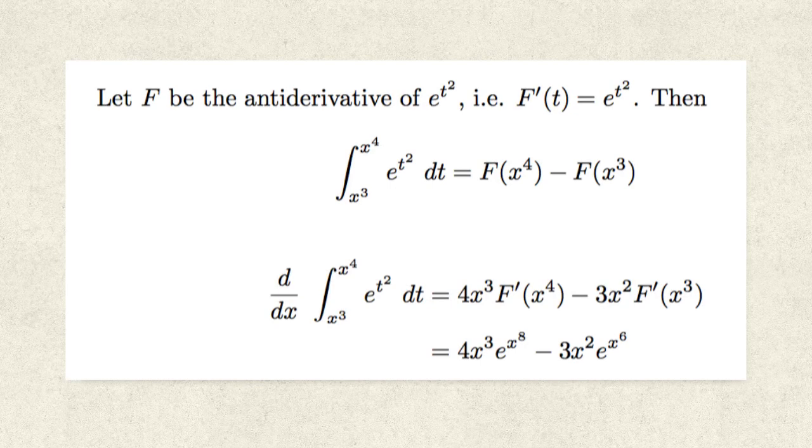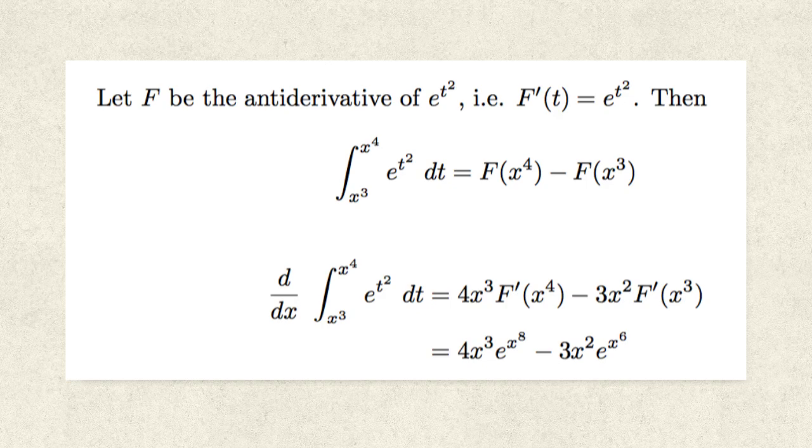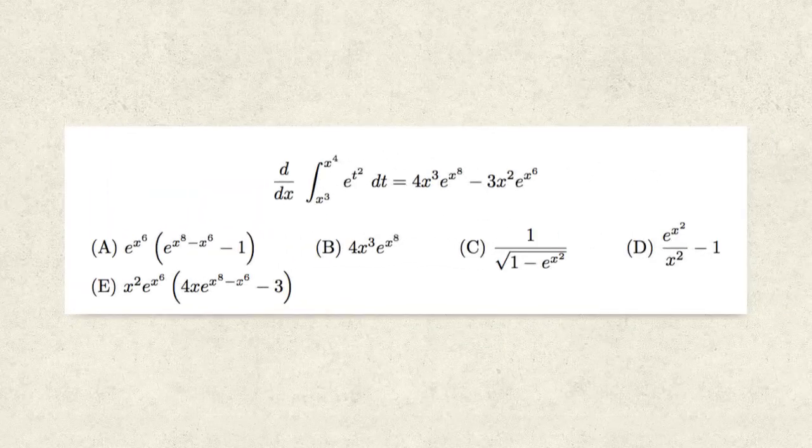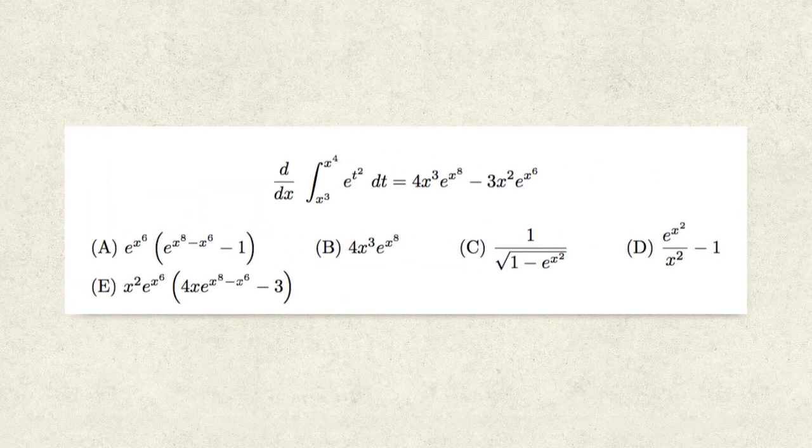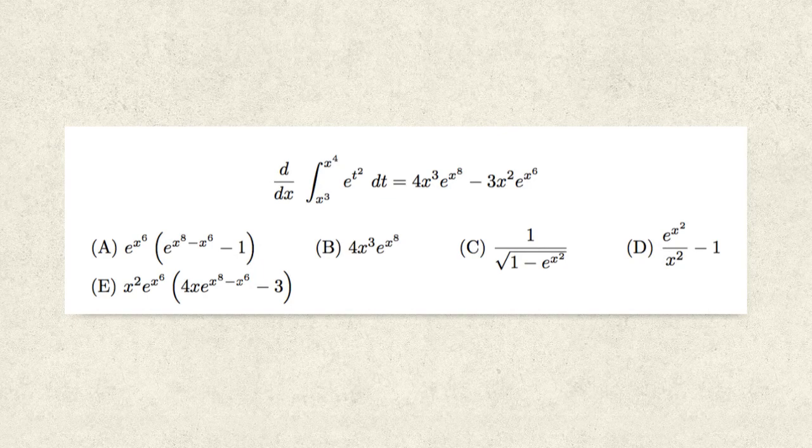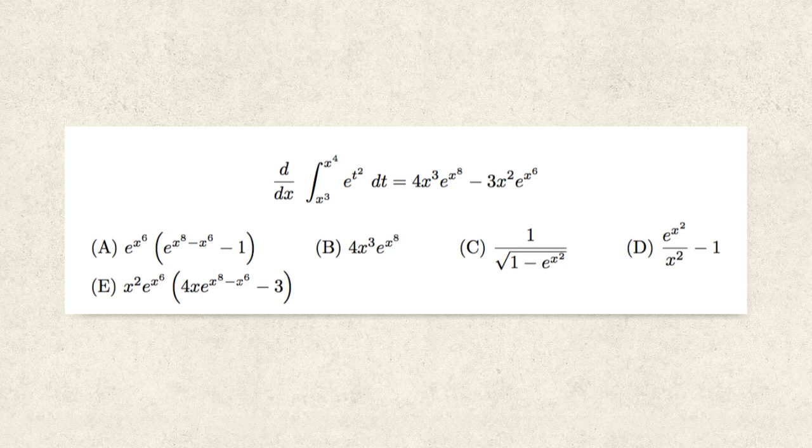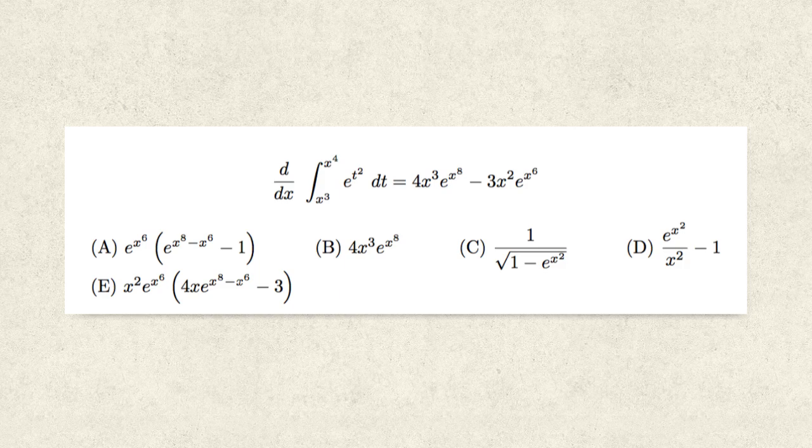And doing so, we get our final answer of 4x cubed e to the exponent x to the eighth minus 3x squared e to the exponent x to the sixth. So now we've determined what the derivative with respect to x of the given integral is. However, our answer doesn't look like any of the answer choices that are given to us. We see a slight resemblance to E, but we don't know that it's exactly the answer choice E.